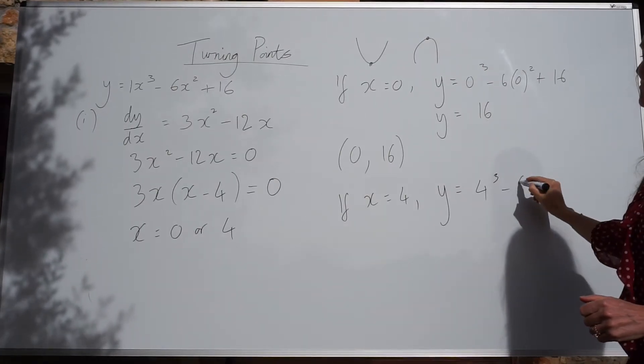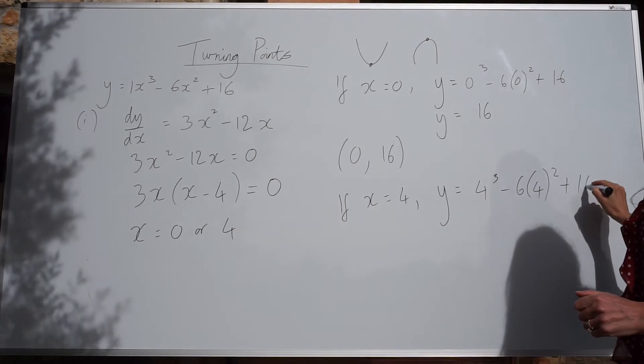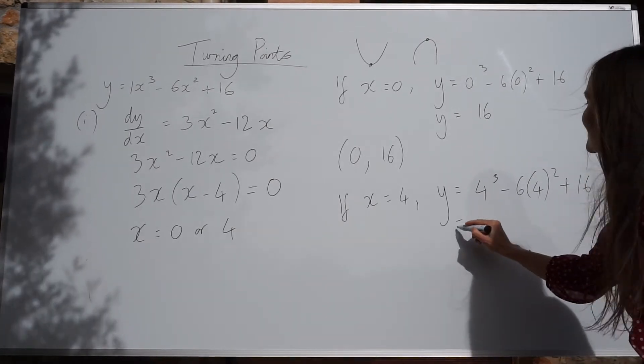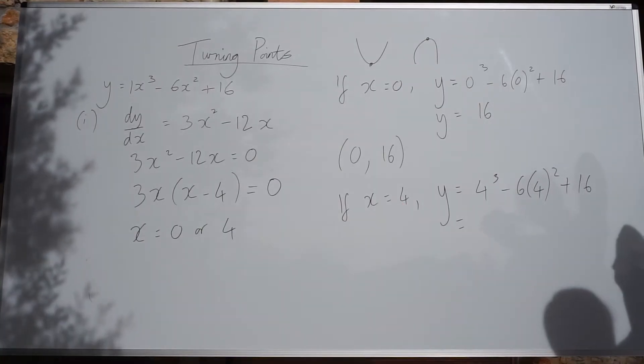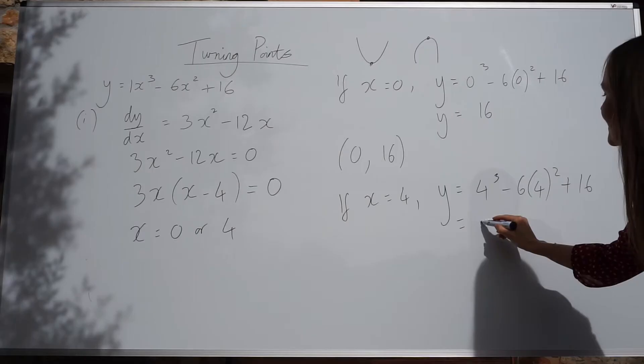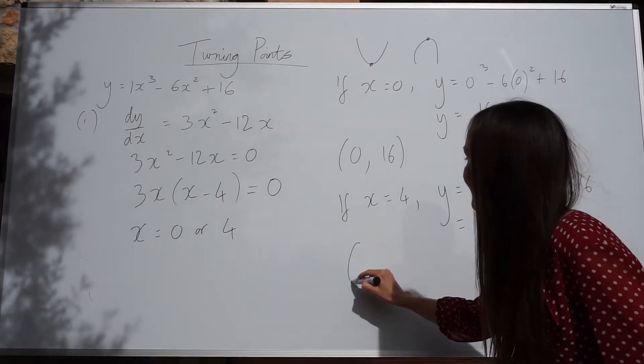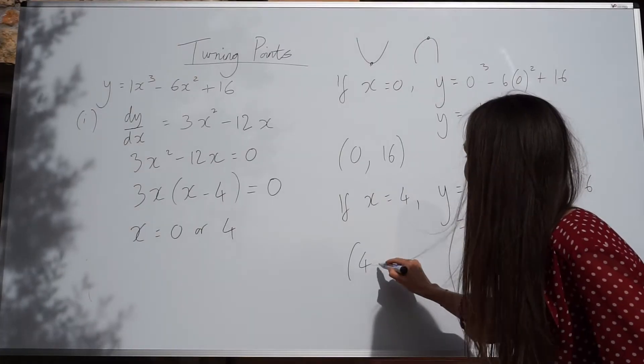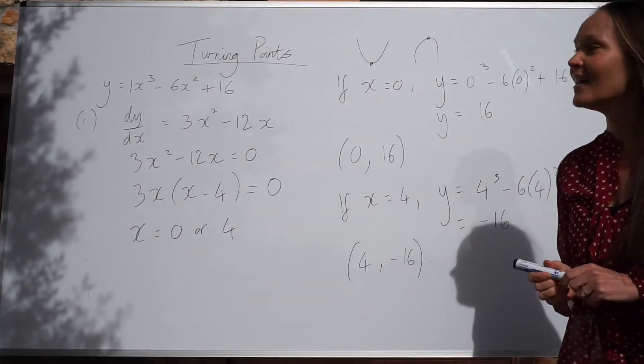Then we've got minus 6 lots of 4 squared plus 16. So you can work that out in your head. Maybe you're allowed to use a calculator in your exam. When you work it out, you should get negative 16. So we've found the second point, or the second turning point, the coordinates of the second turning point.